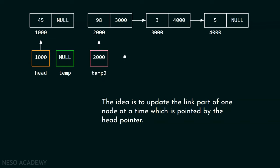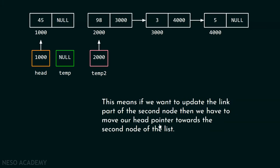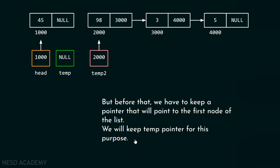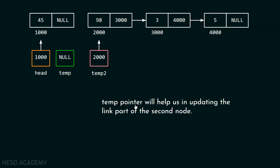We move head towards the second node, but before that we keep a temp pointer pointing to the first node so we have the reference needed to update the second node's link. We use: temp = head, then head = temp2. The temp pointer will help us in updating the link part of the second node.